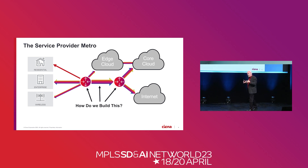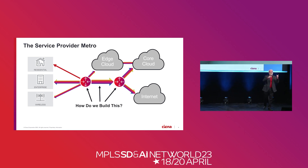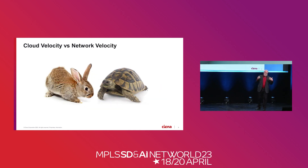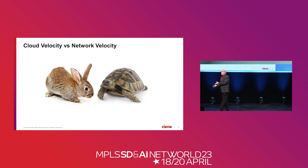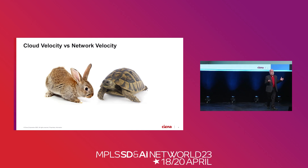From the service provider point of view, there's a competitive angle here, because they know the hyper-giants — the big cloud guys — are building out in parallel. They're very well motivated to get their traffic off the public internet and onto their own infrastructure as soon as possible as it flows toward the cloud, because that's the only way they can give you a guaranteed experience. This drives toward a very interesting problem statement: the velocity at which the cloud can deliver service is just different than the velocity at which the service provider can.